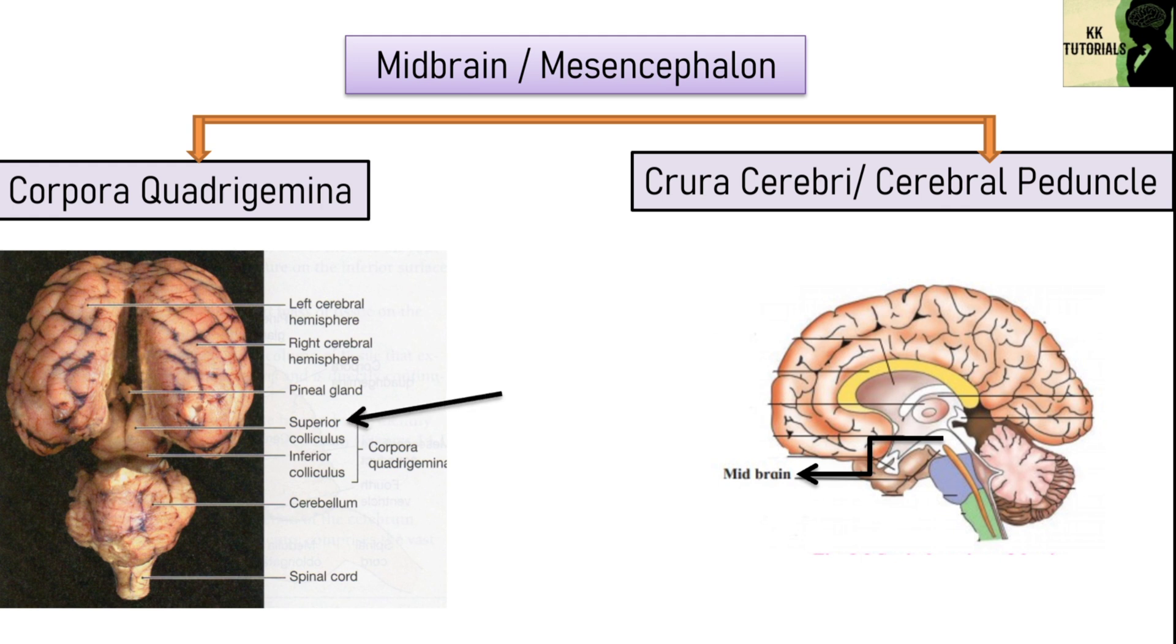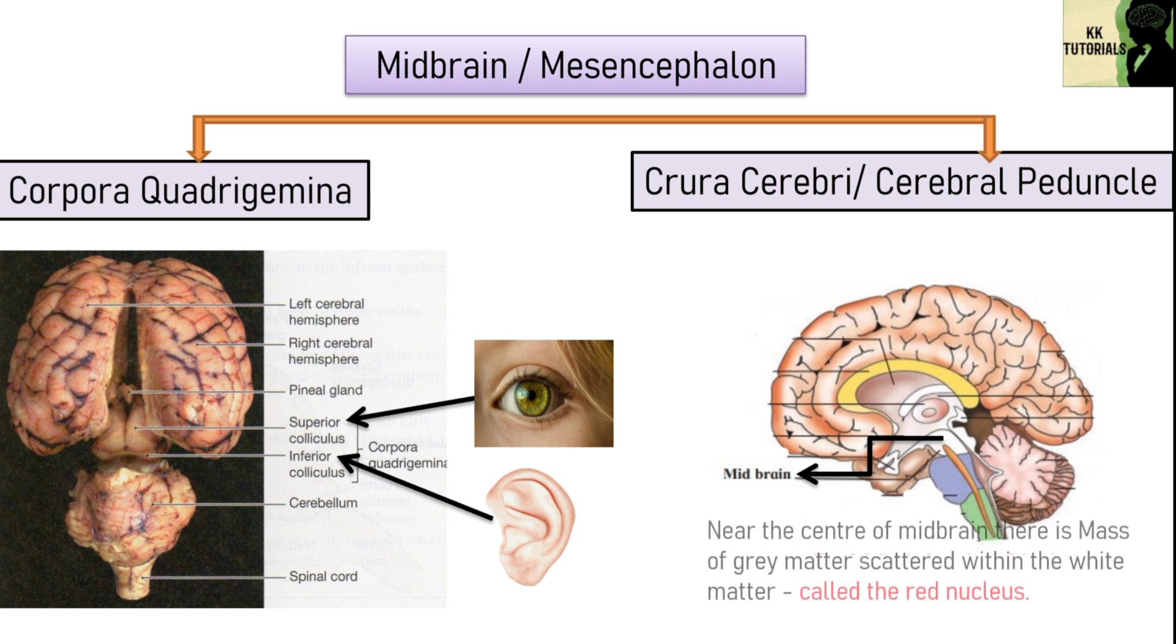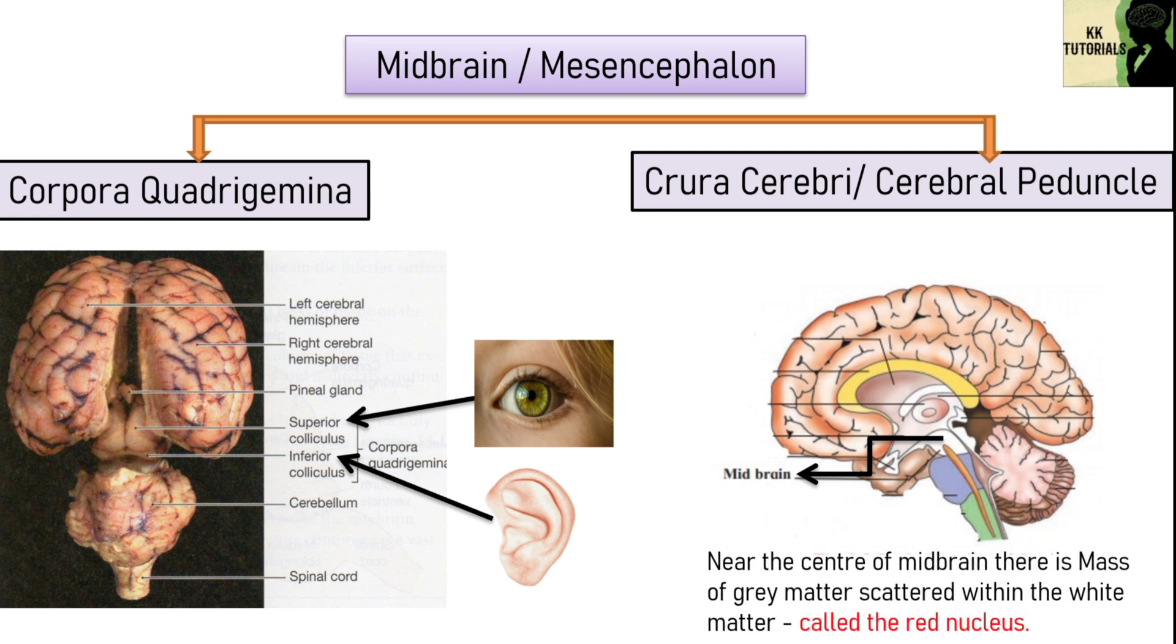The other part, crura cerebri, i.e. cerebral peduncle are thick fibrous tracts present on inferior surface of brain. Near the center of the midbrain is a mass of gray matter scattered within the white matter. It is called the red nucleus. It plays an important role in controlling posture and muscle tone, modifying some motor activities and motor coordination.